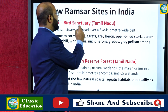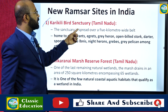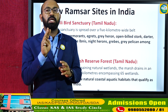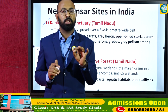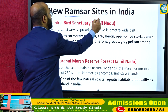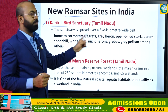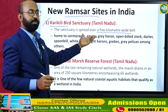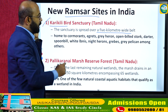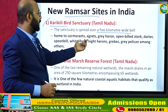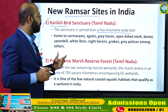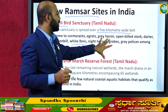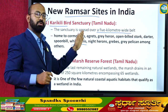The first of the five newly added Ramsar sites is the Karikili Bird Sanctuary in Tamil Nadu. Spread over a five-kilometer wide belt, it is home to various bird species including cormorants, great grey heron, open-billed stork, darter, spoonbill, white ibis, night herons, grebes, and grey pelican.